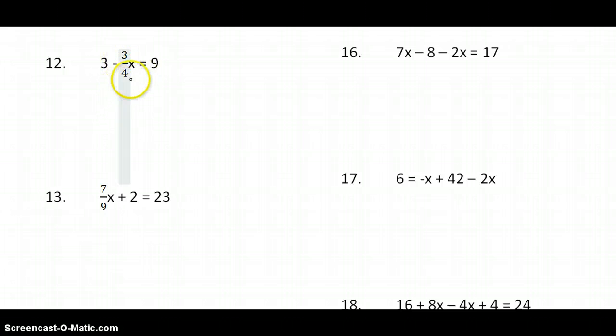I want to be sure we do one example of each style problem. We have 3 minus 3 fourths x. So before I take care of the 3 fourths, I need to take care of my 3. It's a positive 3. So I need to subtract 3 in order to make that 3 go away. We have negative 3 fourths x equals 6.